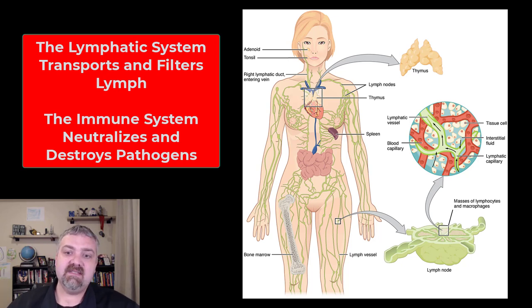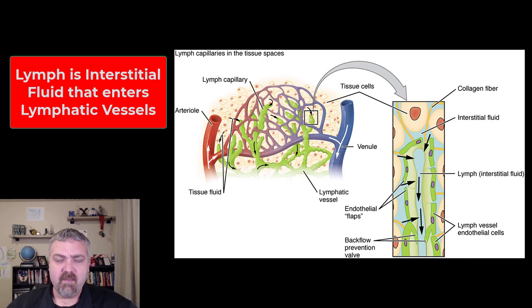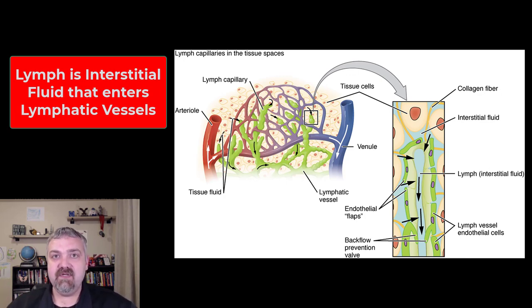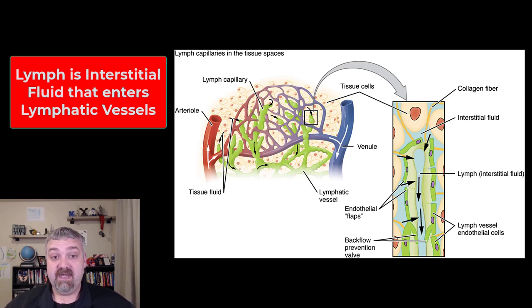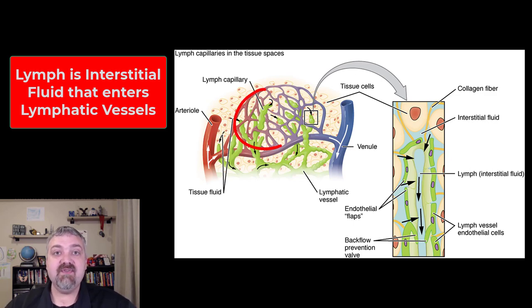Here you see the lymphatic system. Let me show you where lymph comes from. Lymph is the excess fluid that's filtered out of your capillary beds that's not reabsorbed — about 3.6 liters of that fluid a day. When this fluid leaves your capillaries, it's now called interstitial fluid, the fluid between your cells. Once it's entered a lymphatic capillary, a lymphatic vessel, it's now called lymph.